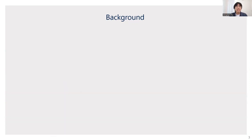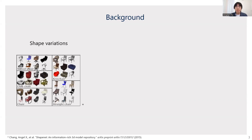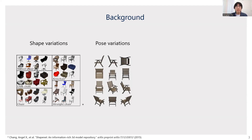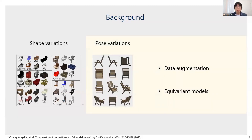Learning on 3D data has been a challenging task due to the large space of variations in data. For example, even simple objects like chairs can have thousands of variations in shapes. Pose changes also result in large variations in the observation, even with the same shape, making the problem more challenging. One typically uses data augmentation to force the network to recognize the same target in different poses. A more principled way would be to use equivariant models with built-in symmetry to the transformations, so that robustness to pose variations is guaranteed and the model capacity is preserved for the underlying shapes. Our method falls in the second category.